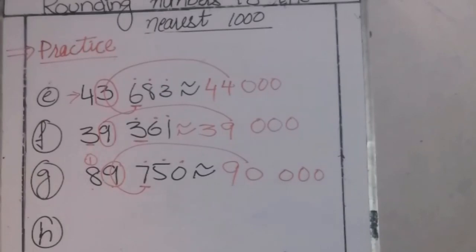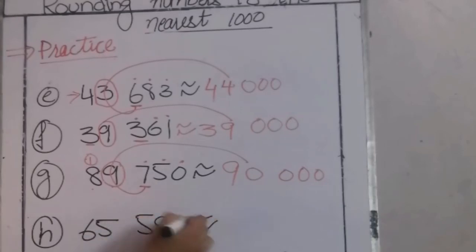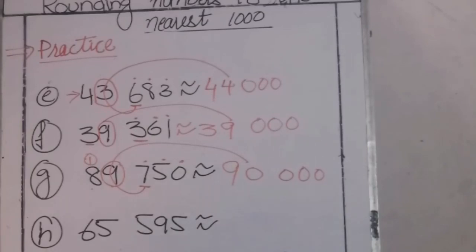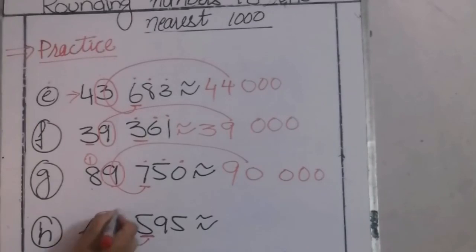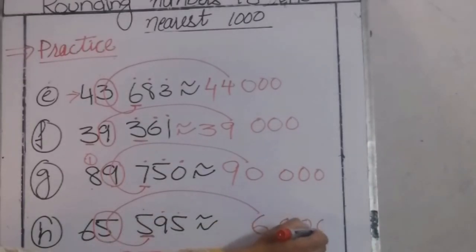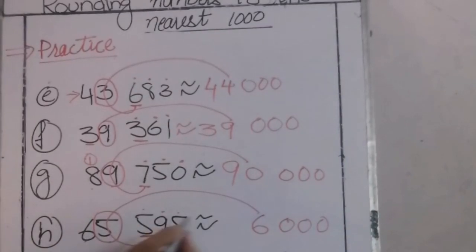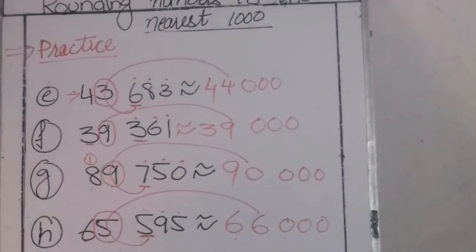Part H: 65,595. Circle the digit at the 1000 place and underline the digit next to the circled digit. The underlined digit is a strong number — it pushes up my 5, and 5 becomes 6. All digits after the circled digit become 0 in the final answer, and the digit before the circled digit remains the same. So 65,595 becomes 66,000.